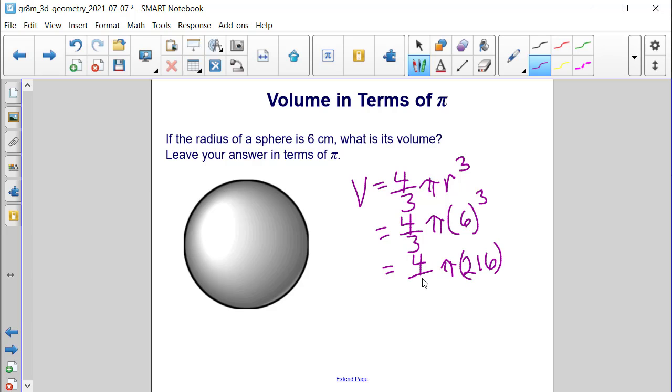And we still have the 4 thirds. And then 3 can be divided into 216. It goes in 72 times, and the 3 becomes a 1. So now let's multiply 72 times 4. And when we do that, we will get 288 pi cubic centimeters for the volume.